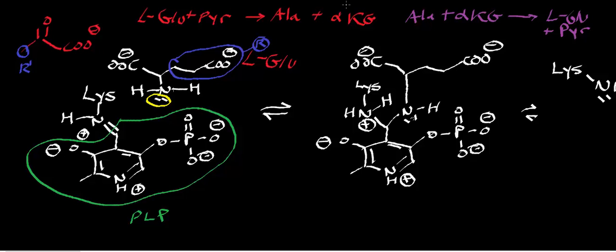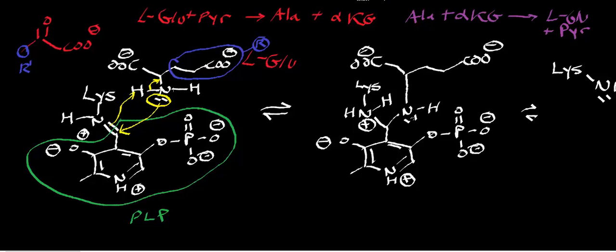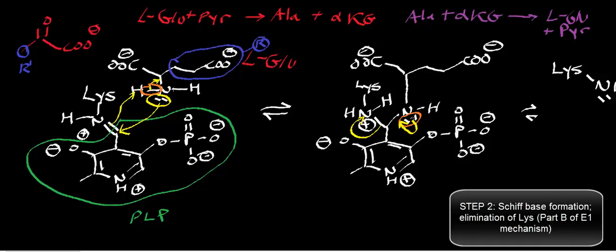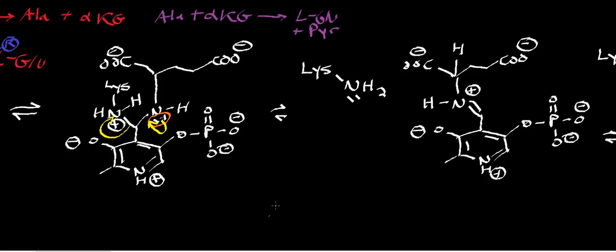The first step of the mechanism is nucleophilic attack by the nitrogen of the alpha-amine of glutamate on the Schiff base carbon, which is activated between the lysine and the pyridoxal phosphate. This forces a proton transfer from the alpha-amine, generating another lone pair on the nitrogen. The elimination of lysine then occurs in two steps — a unimolecular elimination — where that lone pair kicks back in and expels the lysine residue in its deprotonated form, which will initiate catalysis.